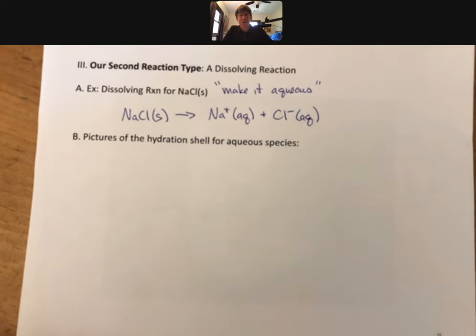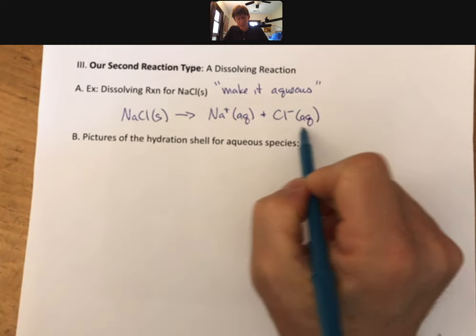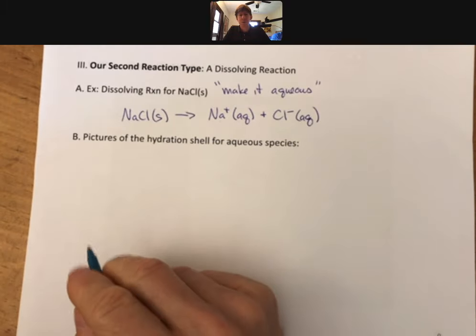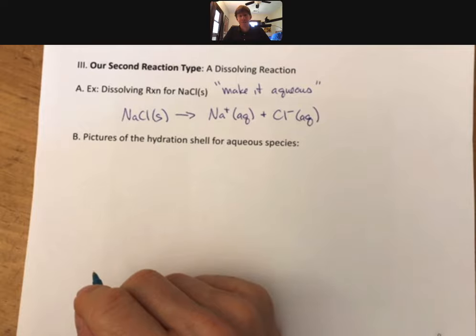That is a dissolving reaction for sodium chloride. You can see that both things here are aqueous. And since they're aqueous ions, that's what we put. Aqueous means dissolved in water. Let's tell you what that means now.